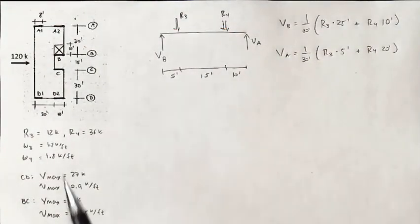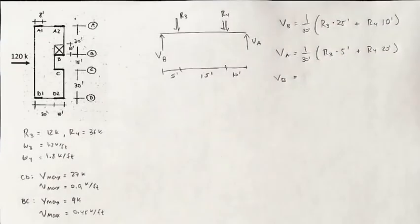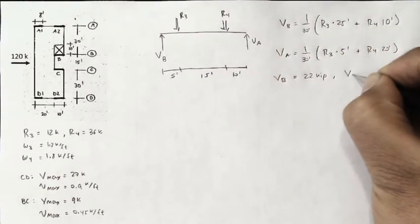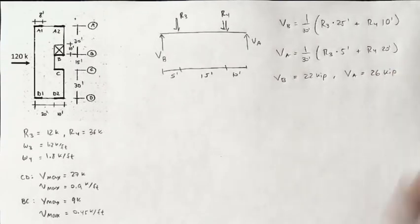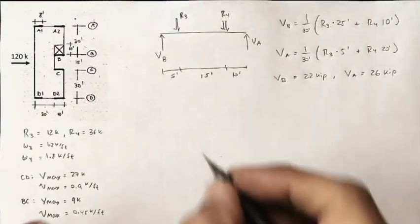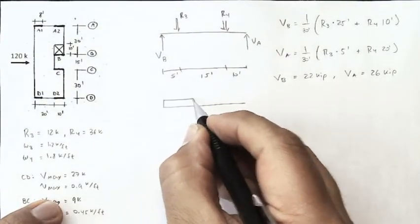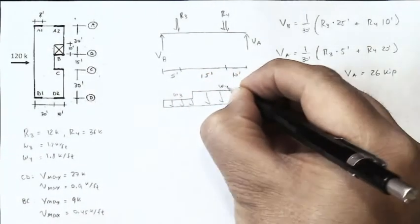We have all the necessary values, R3, R4. We can plug in, and we would find that the value for shear at B is 22 kips, and the value for shear at A is 26 kips. To draw a shear diagram, of course, we need the actual distributed load. With values W3 here and W4 here, that are given over on this side.